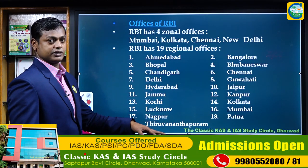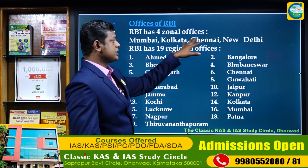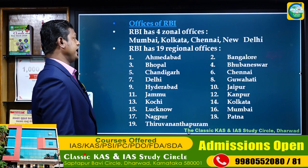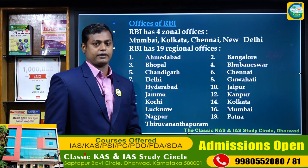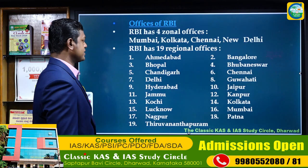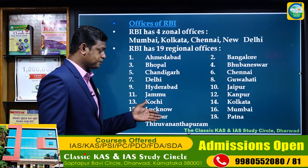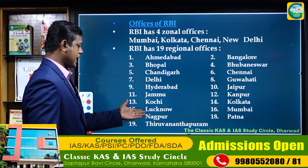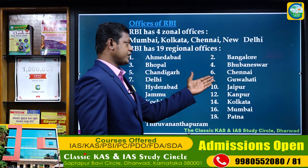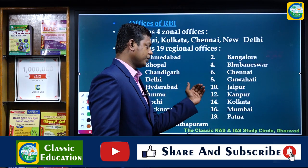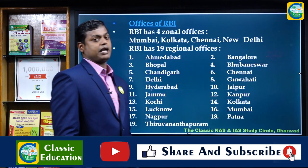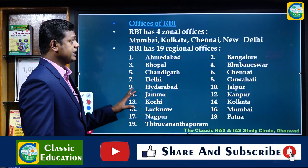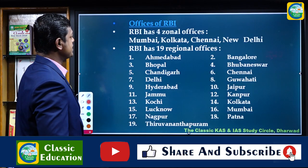RBI has four personal offices in Mumbai, Kolkata, Chennai, and New Delhi. The remaining are 19 regional offices. The regional offices are located in Chandigarh, Delhi, Hyderabad, Jammu, Kochi, Bengaluru, Bhubaneswar, Chennai, Guwahati, Jaipur, Kanpur, Kolkata, Mumbai, and others.